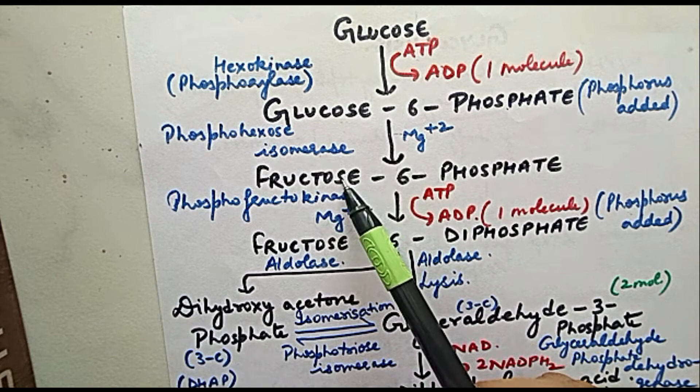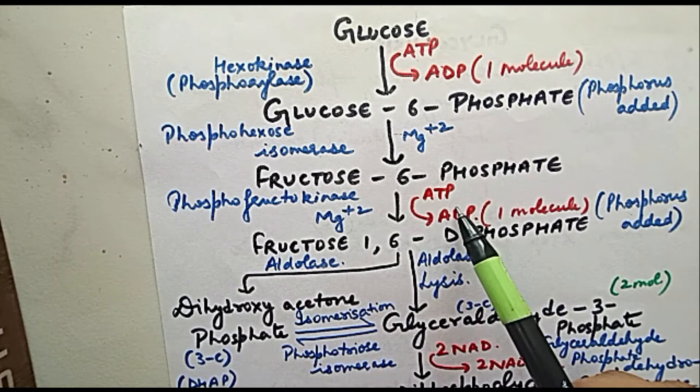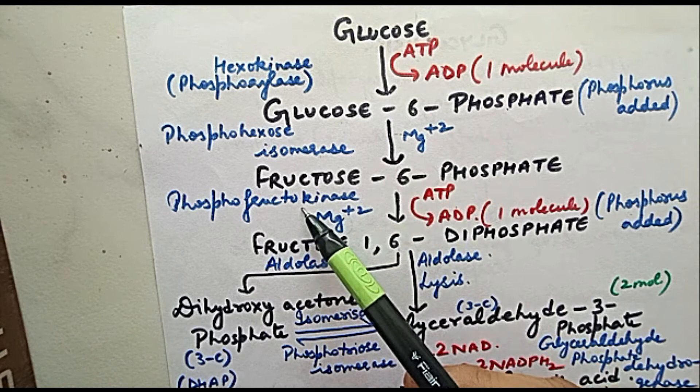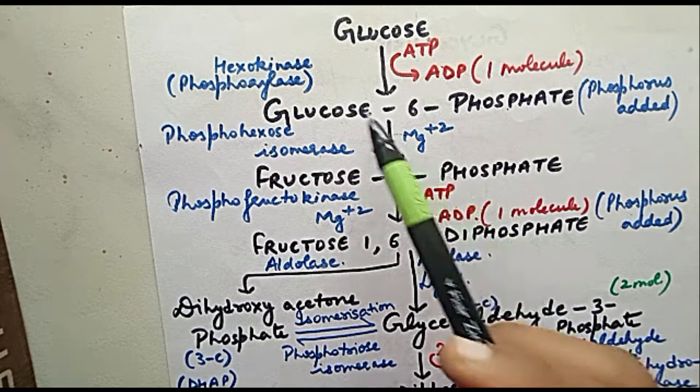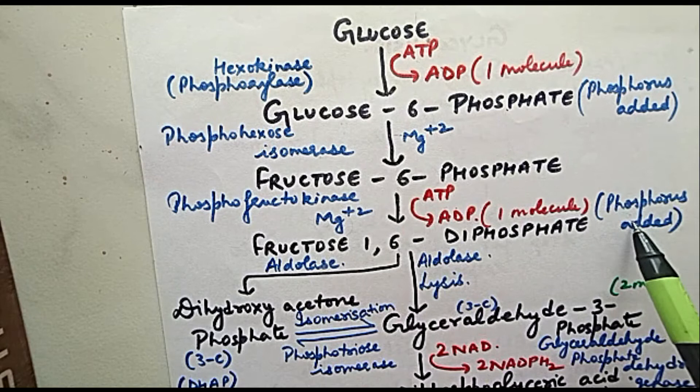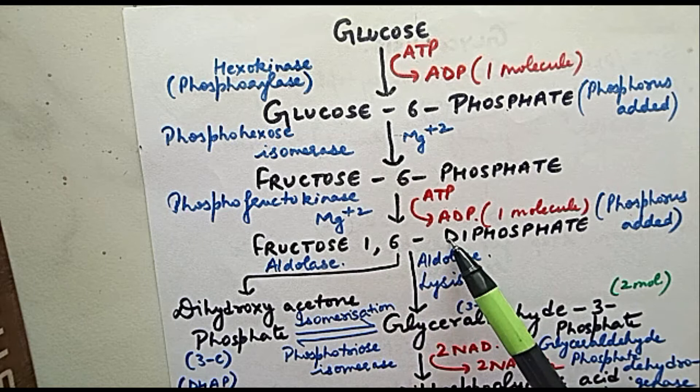In the next step, fructose-6-phosphate will get converted to fructose-1,6-diphosphate. ATP is used, magnesium ions are used here, and enzyme involved is phosphofructokinase. When kinase word comes, ATP is involved. Here phosphorus is also added, making fructose-1,6-diphosphate.